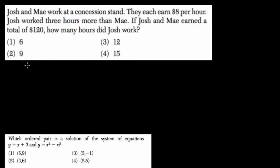Okay, Josh and Mae work at a concession stand. They each earn $8 per hour. Josh works three more hours than Mae. So Josh's hours are 3 plus M. Whatever Mae worked plus three, that's what Josh's hours are.